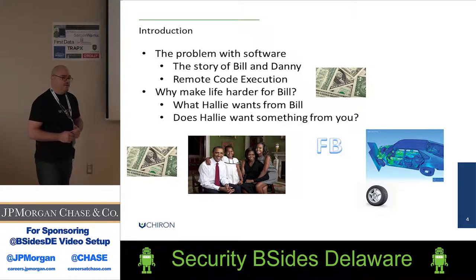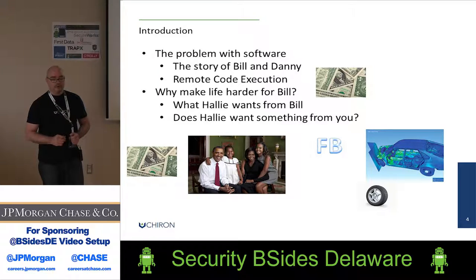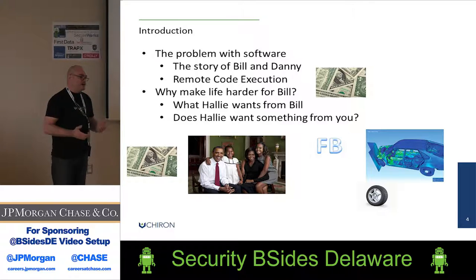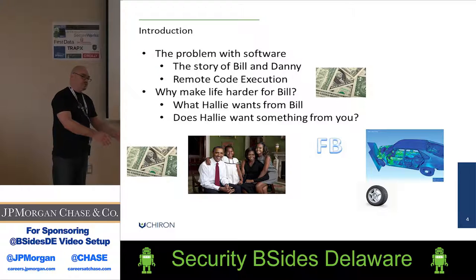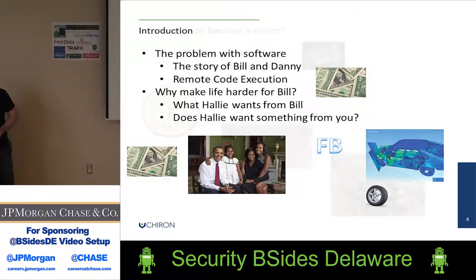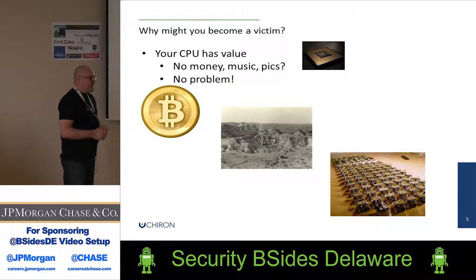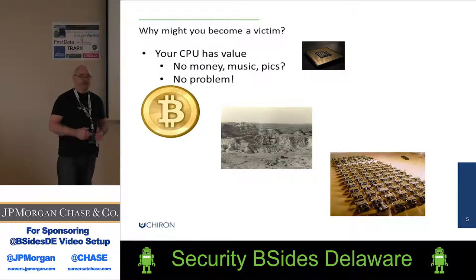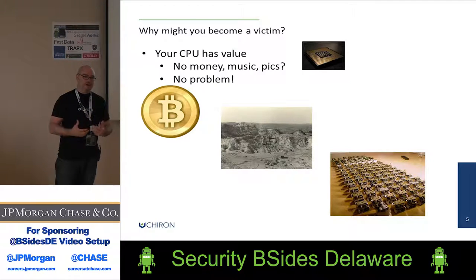Maybe you do some online banking through your telephone, your laptop, or your desktop computer — all of which I'll refer to as 'your computer' from this point forward. Maybe you control investment accounts, maybe you have pictures of your family, or a browser that's logged into Facebook. Or maybe you have a car where the CPU talks to the tires over Bluetooth and talks to the brakes over an internal network. Are these things important to Hallie? You might be the target of an attack because your CPU — the brain of your computer — has value to Hallie. Even if you don't have access to money or pictures or music on your computer, the fact that you have a processor is valuable to her.